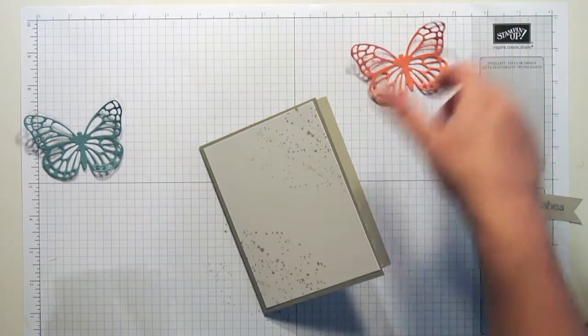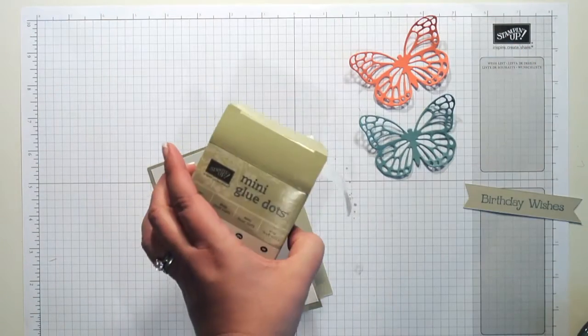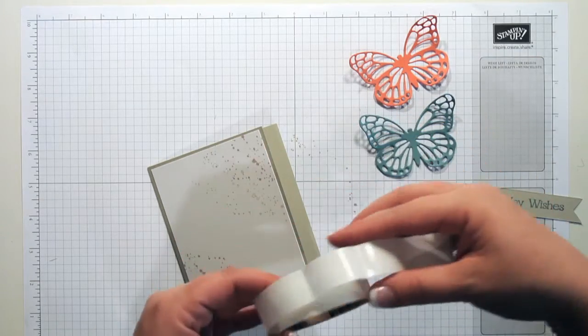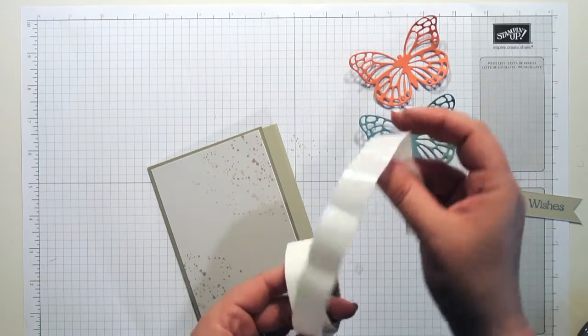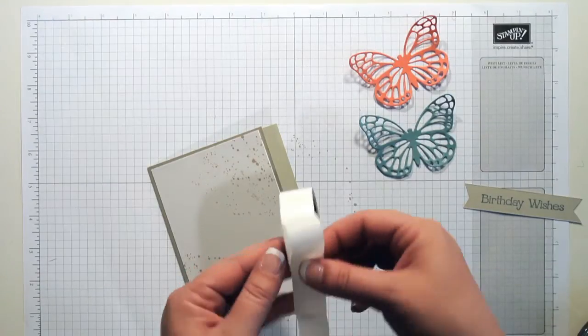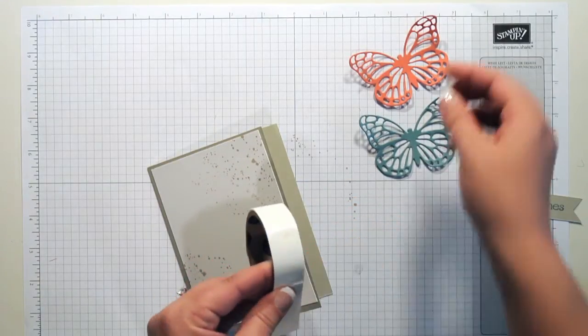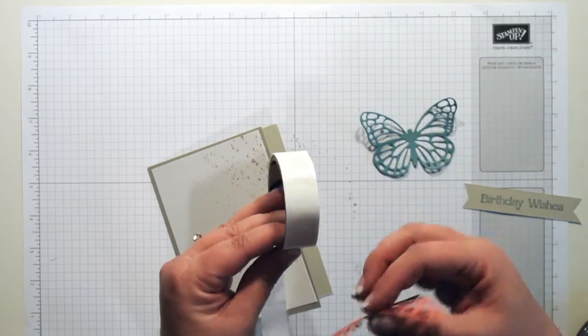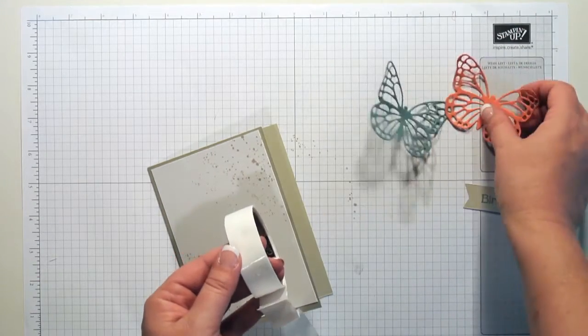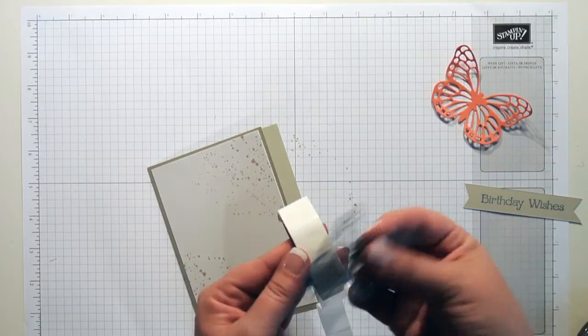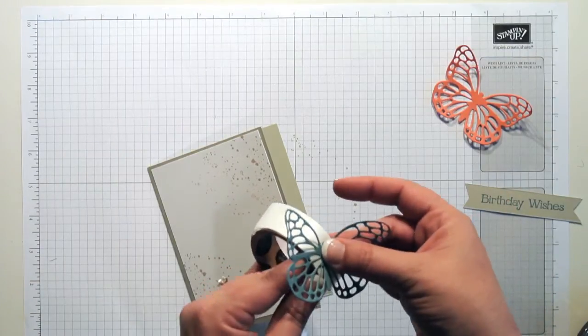And for my butterflies, I'm going to use mini glue dots. These are great for when you want to use a smaller image or a smaller surface area. They are self-adhesive dots, and I could just take my butterfly and go straight to the glue dot on the roll. So I just want to put it right down like that.